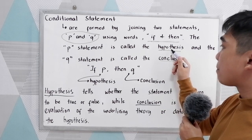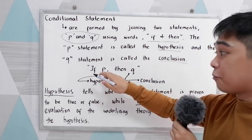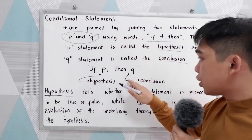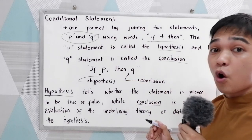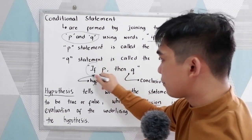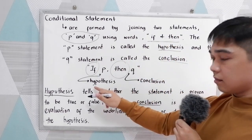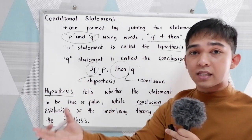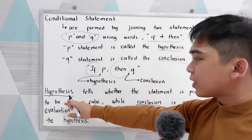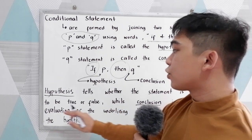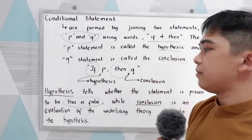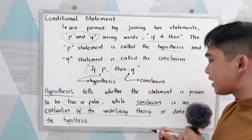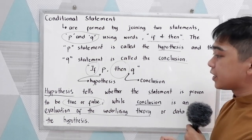We have here the hypothesis and the conclusion. In 'if P then Q,' P represents the hypothesis and Q represents our conclusion. The hypothesis tells whether the statement is proven to be true or false, while the conclusion is an evaluation of the underlying theory or data of the hypothesis.